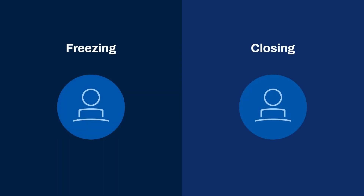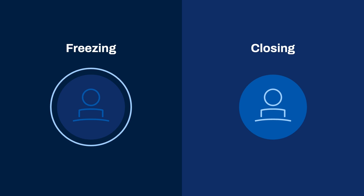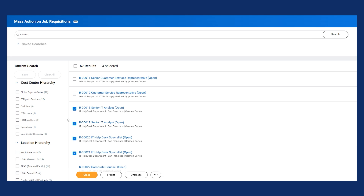Let's review the distinction between freezing and closing. Freezing a job requisition freezes the position; however, the position remains unfilled. When you close a job requisition, the option to also close the unfilled position depends on your organization's configuration. The good news is whether you plan to freeze or close, you can handle it in bulk by using Mass Actions. To close, freeze, or unfreeze multiple job requisitions, run the Mass Action on Job Requisitions report. Here, you'll find search facets that allow you to identify and select the specific job requisitions you want to act on.